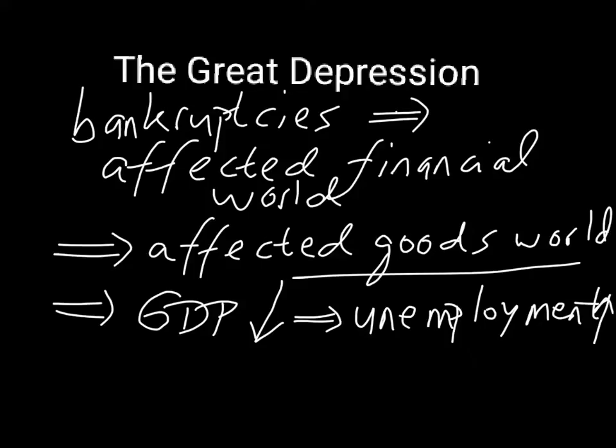I want to reiterate that it wasn't necessarily the crash that caused the severe economic problems afterward, but it was really the excessive borrowing that took place before those crashes. Because if people hadn't borrowed money for stocks or for houses in the 2000s, there would not have been this chain effect of negative economic things. Certainly the economy would have been negatively affected, but because the chain effect would not have taken place, it would not have led to a Great Depression in the 1930s, or after 2008-2009, what they called the Great Recession.